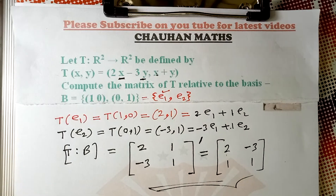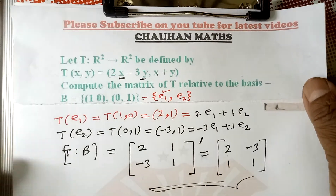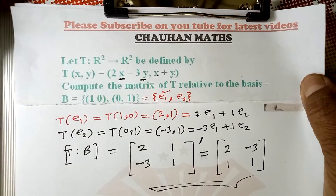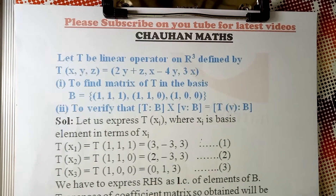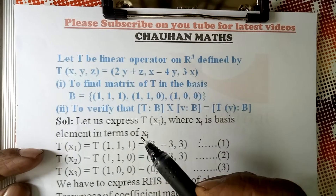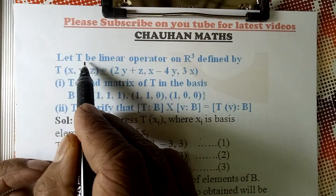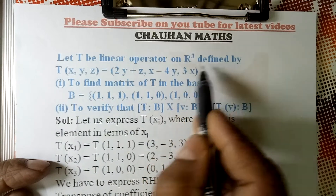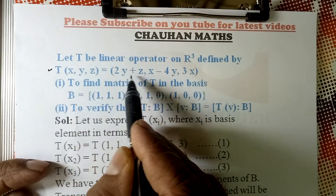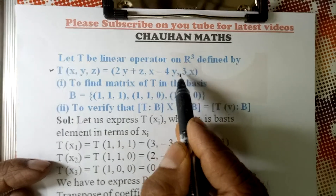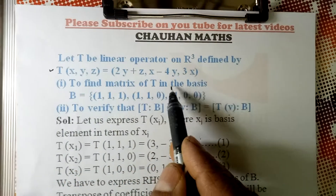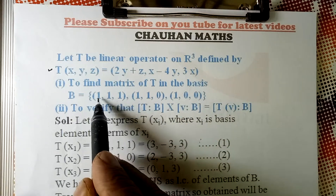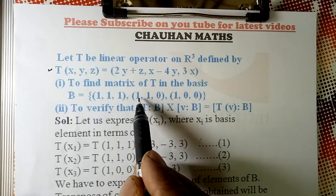Let us go to the next example. Let T be a linear operator on R³ defined by T(x,y,z) = (2x plus 2y plus z, x minus 4y, 3x). We need to find the matrix of T in the new basis B = {(1,1,1), (1,1,0), (1,0,0)}.